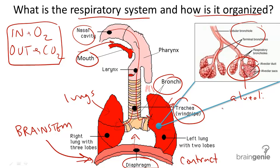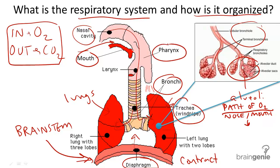So how does the air travel from your mouth into the lungs? Let's go over the path of oxygen. Oxygen first enters through the nose or the mouth, then enters the pharynx, which is the upper throat, followed by the larynx, the lower throat where the voice box is housed.